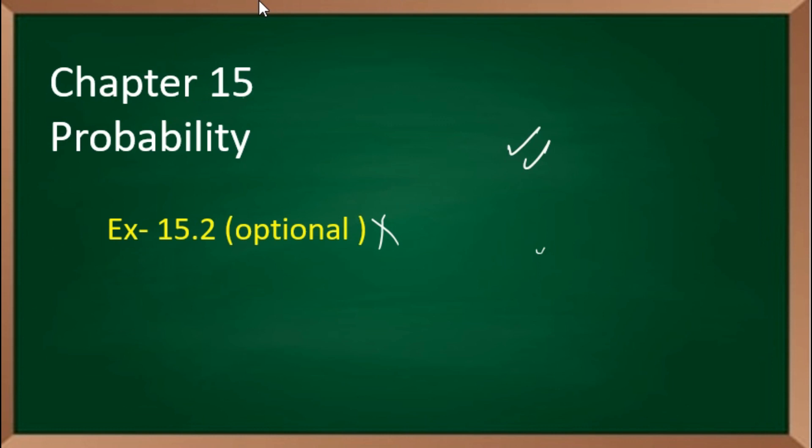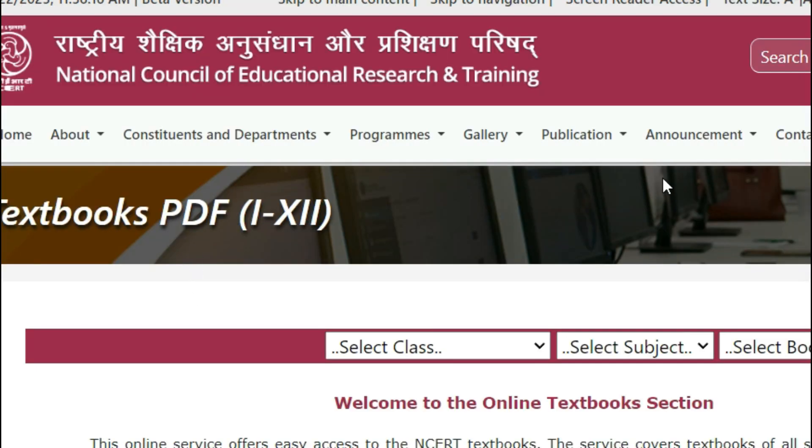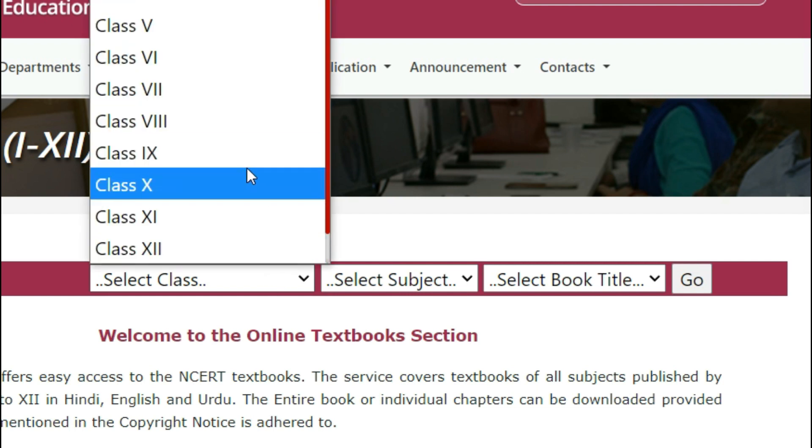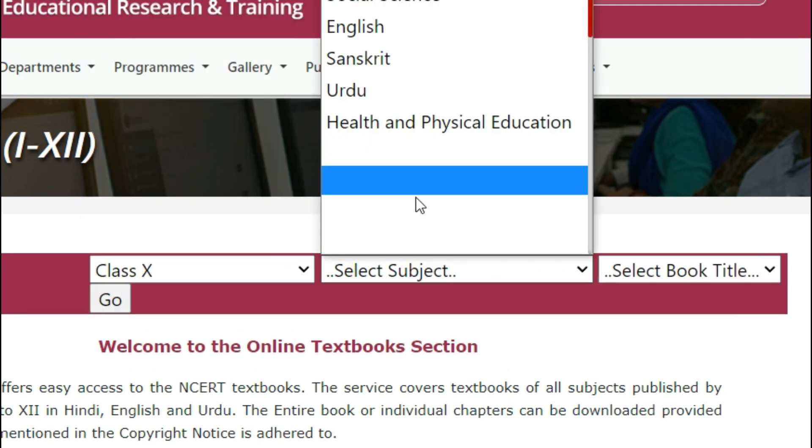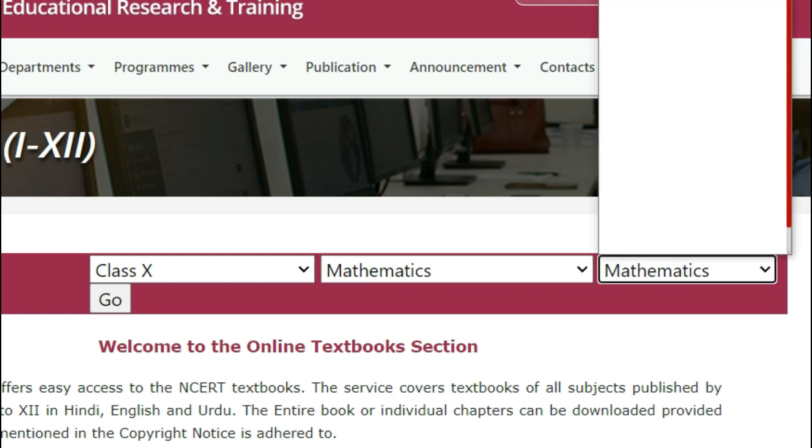So guys, you have to go to Google and type NCERT books. You have to click on ncert.nic.in. So the interface will open, then you have to select class 10, you have to select subject Math, and you have to select title Mathematics.